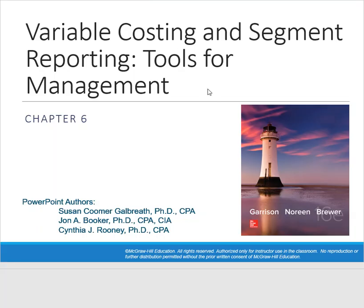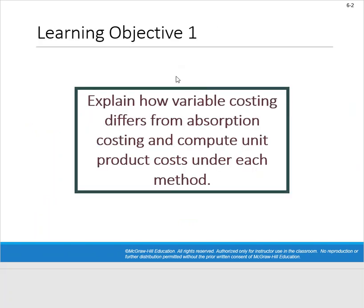So variable costing and segment reporting. We've been spending a lot of time talking about variable costing. We need to understand how variable costing differs from absorption costing and be able to compute our unit product cost under each method. When we say absorption costing, that's also somewhat synonymous to traditional costing, as opposed to variable, where we're looking at cost behavior — separating out our variable expenses and our fixed expenses. Absorption is traditional: sales minus COGS equals gross margin, then we subtract selling and admin expenses to arrive at net income. We will compare the two different methods.